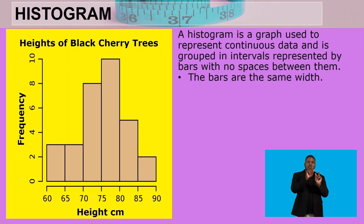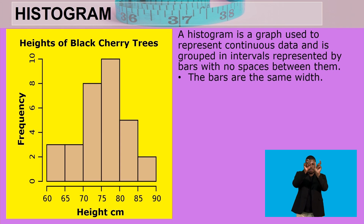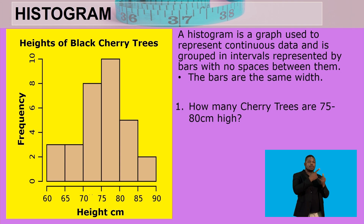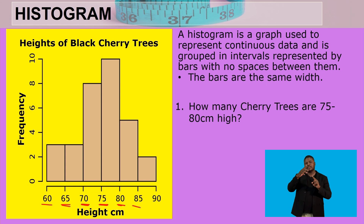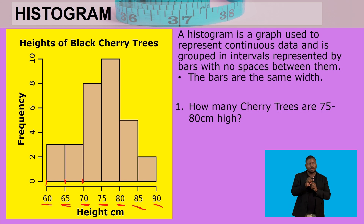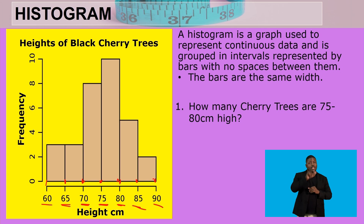Welcome back learners. A histogram is defined as a graph to represent continuous data, grouped in intervals represented by bars with no spaces in between. The bars are the same width. For example, the intervals given are 60 to 65, 65 to 70, 70 to 75, 75 to 80, 80 to 85, and 85 to 95 — each interval is 5 units wide. The bars all have equal width.